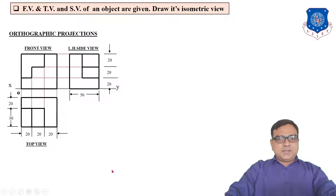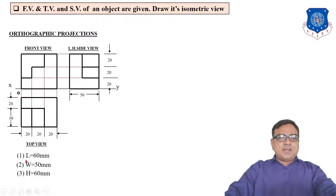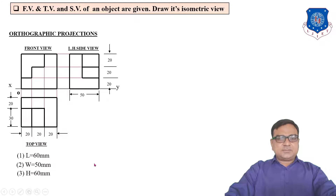First of all you have to find out the overall length, width and height of the object. Length is 60 mm, width is 30 plus 20 equals 50 mm, and height is 20 plus 20 plus 20 equals 60 mm. I have given the number 1 for length, 2 for width and 3 for height. Length can be found from front view or top view. Width can be found from top view or side view. Height can be found from front view or left hand side view.